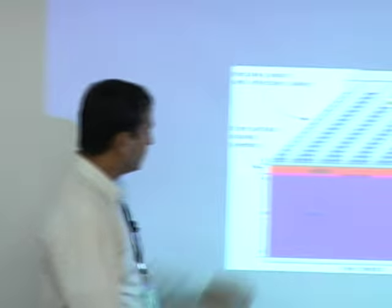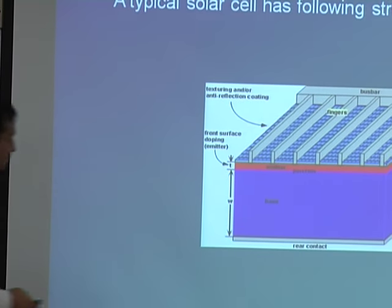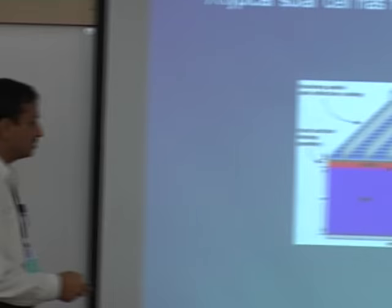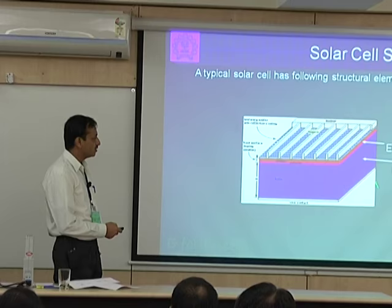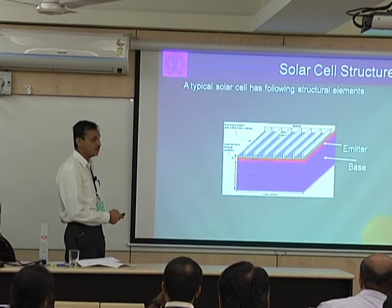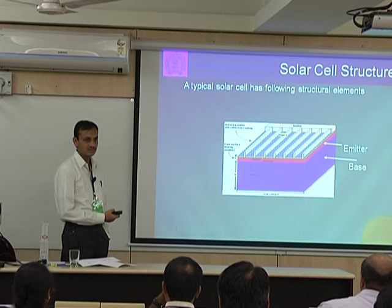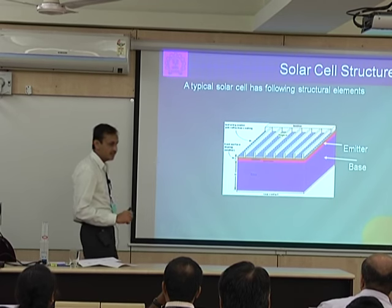You have the starting material called the base, then you make your emitter — that is the junction. The current industry standard is P-type base and N-type emitter.